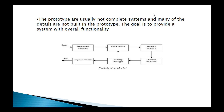Next, looking at the actual diagram, the phases are: requirement gathering, quick design, building prototype, customer evaluation, refining prototype, and engineered product. These are the different phases that are going to be implemented for developing the actual software project. The first phase is requirements gathering.